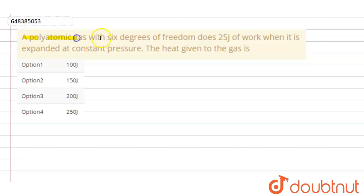Hello students, so the question is: A polyatomic gas with six degrees of freedom does 25 joules of work when it is expanded at constant pressure. The heat given to the gas is?